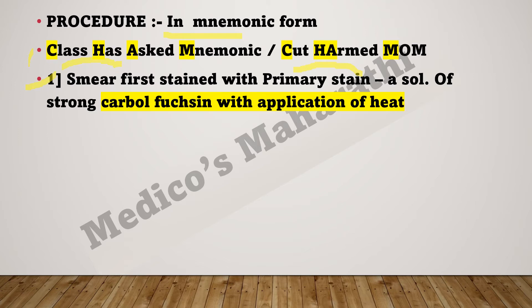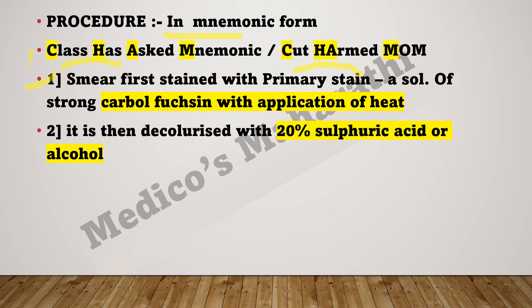Next, the smear is decolorized with 20% sulfuric acid or alcohol. 'A' in the mnemonic stands for acid — specifically sulfuric acid — and also for alcohol. We use 20% sulfuric acid, or sometimes 5% can also be used. It depends on the case. So the second step is decolorization with acid or alcohol.